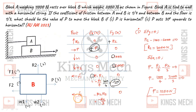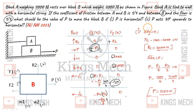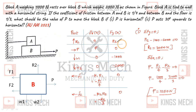Applying summation Fy = 0 for block B: R2 minus W1 minus W2 = 0, so R2 minus 1000 minus 2000 = 0, giving R2 minus 3000 = 0, therefore R2 equals 3000 Newton.